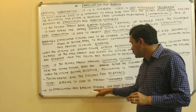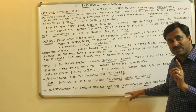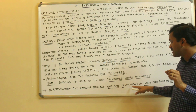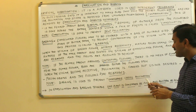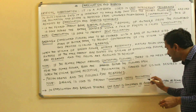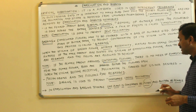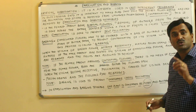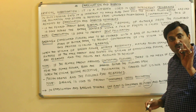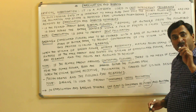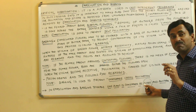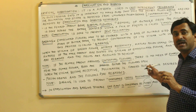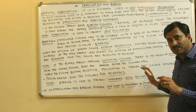To complete the process of emasculation and bagging, we must use two plants. One plant will be treated as the male parent and the other plant will be treated as the female parent.